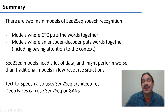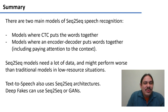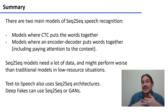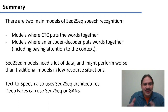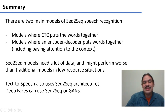Sequence-to-sequence models need a lot of data and can perform worse than traditional models if you don't have sufficient data. A traditional model needs roughly 5 to 10 hours of audio to start recognizing speech, whereas a sequence-to-sequence model needs hundreds — at least 300 hours — for it to start working. Text-to-speech systems also use sequence-to-sequence architectures, as we've seen, including systems that produce deep fakes. Some use sequence-to-sequence and some use Generative Adversarial Networks.